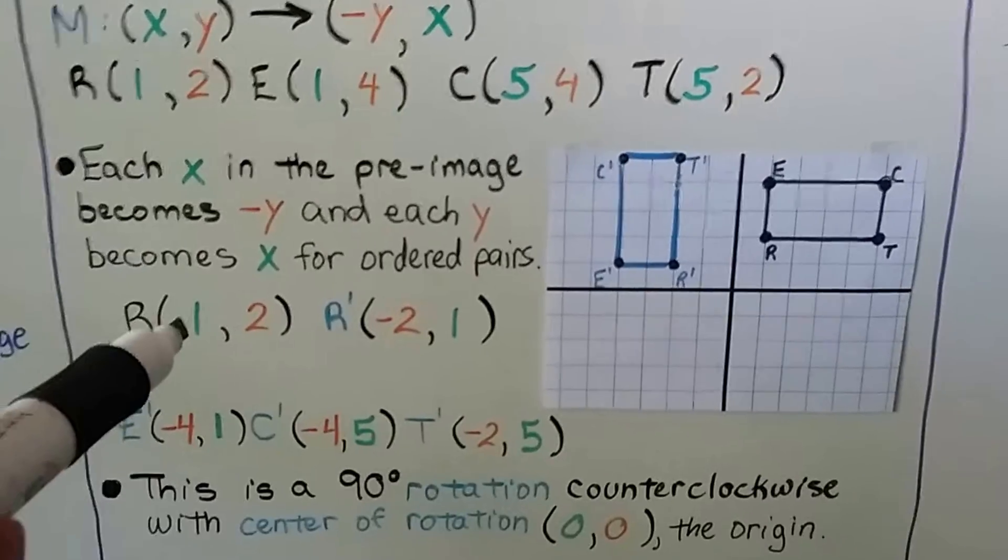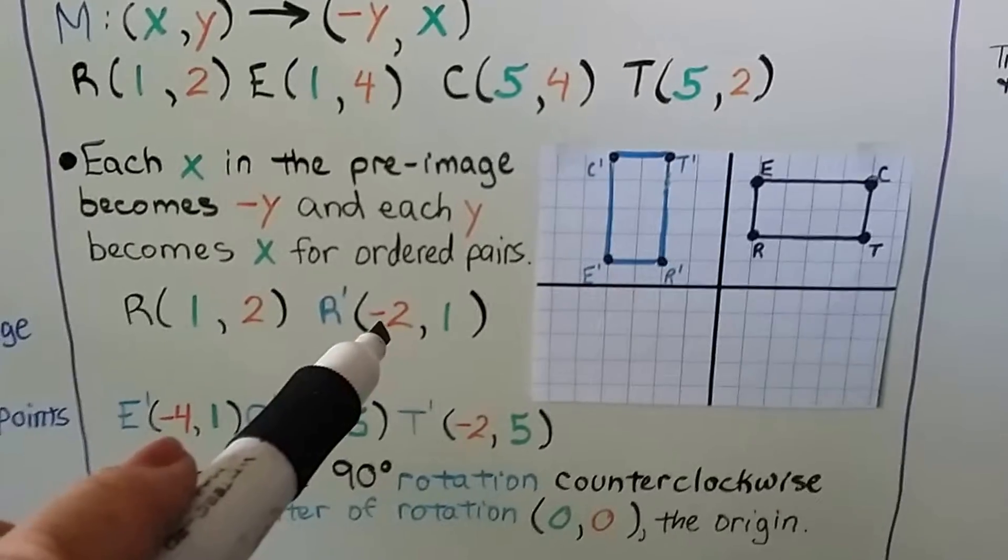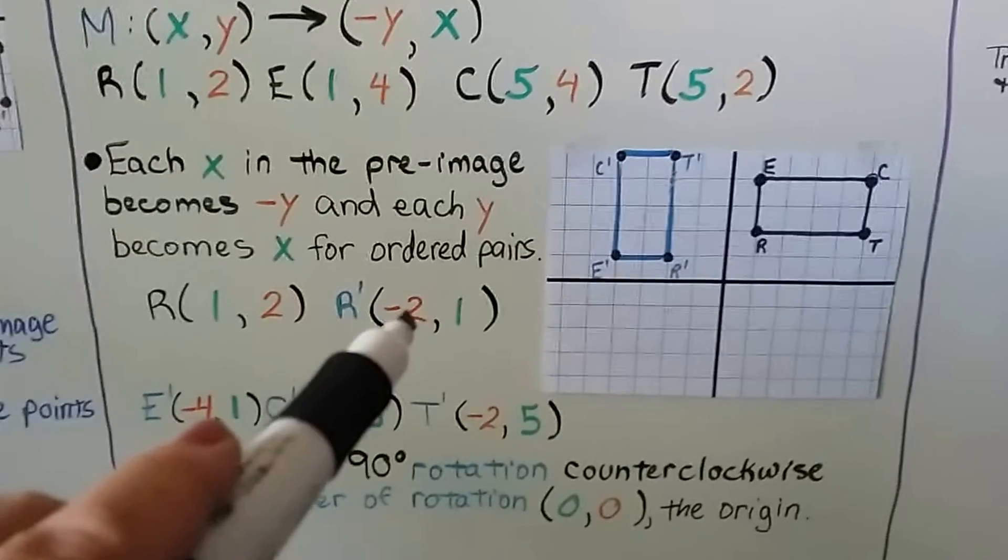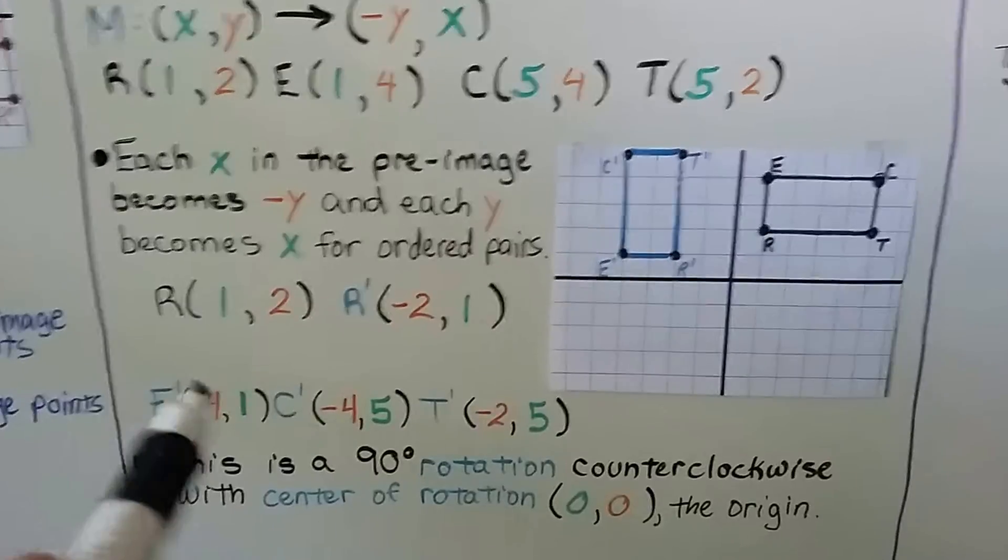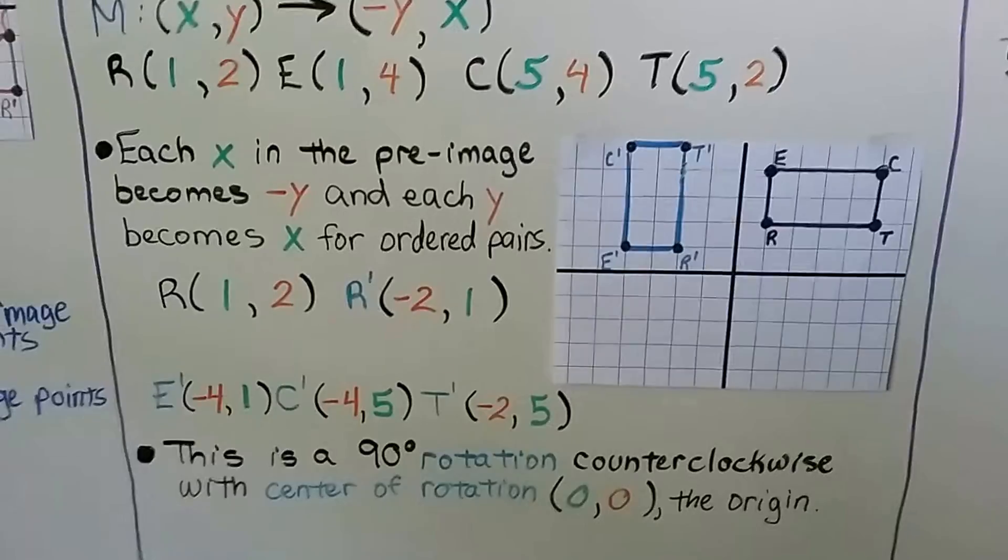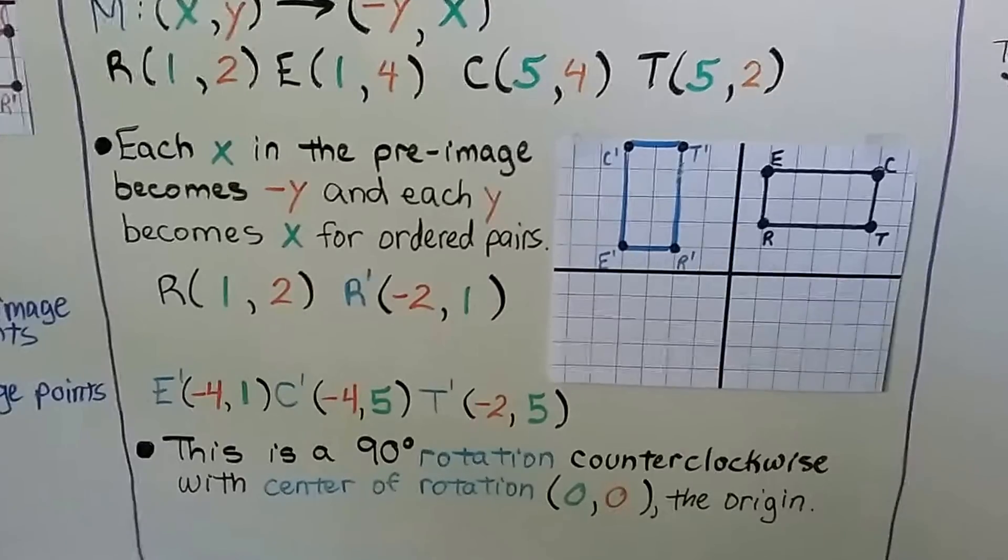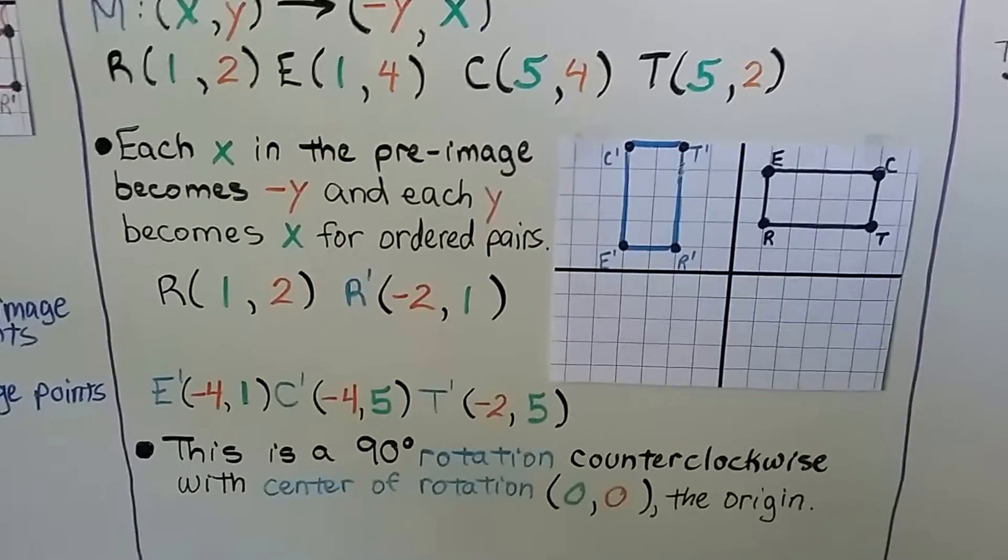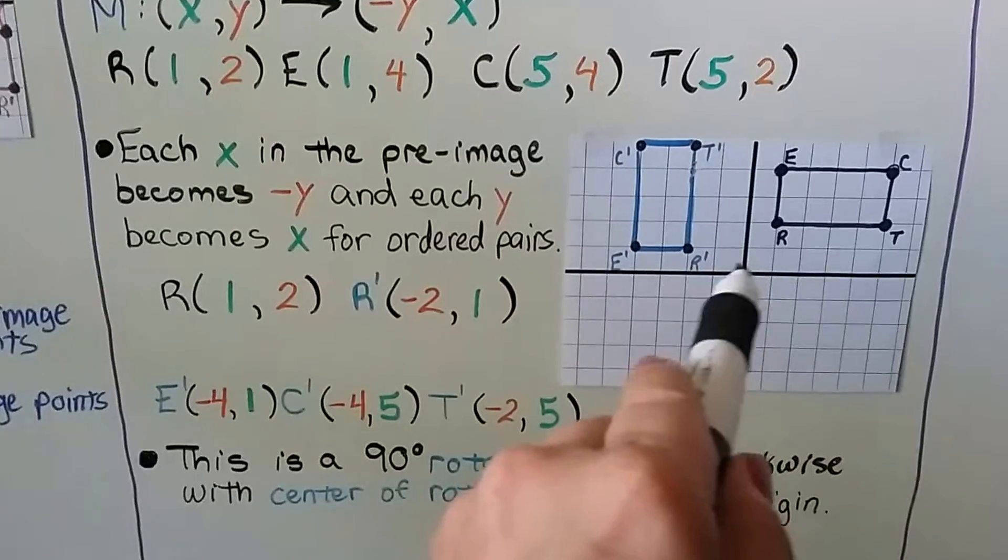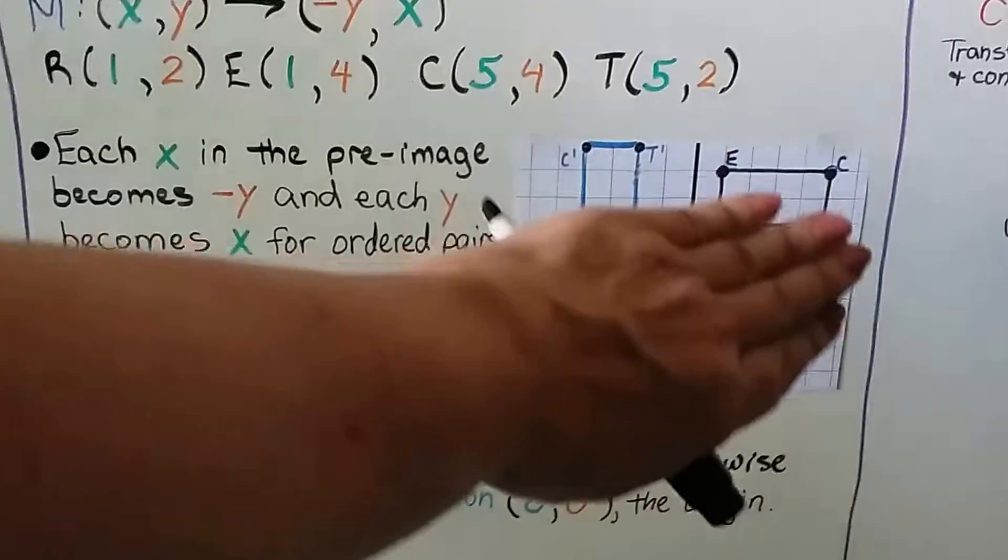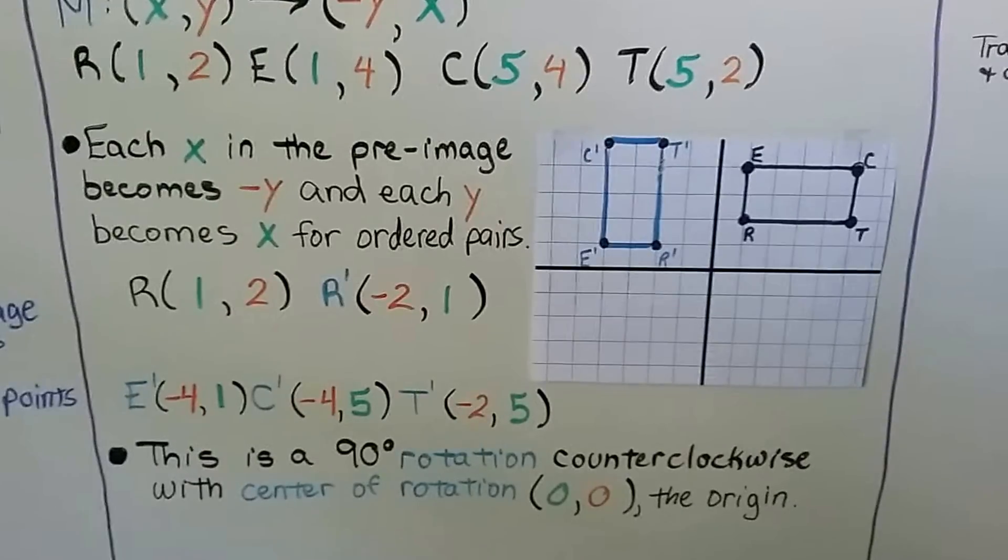So if R is a 1 for x and a 2 for y, we're going to put a negative y here. It was a 2, so now it's a -2, and then we put our x here. So we have (-2, 1). We do it for each of the other points to do E prime, C prime, T prime. So this is a 90 degree rotation counterclockwise with center of rotation (0, 0), the origin. So our center of rotation is right here. So the whole image was here, and then turned 90 degrees counterclockwise.